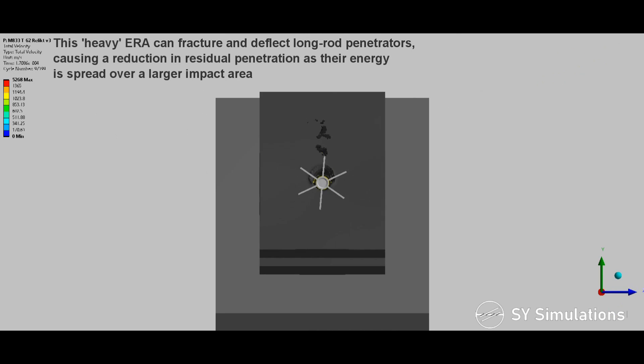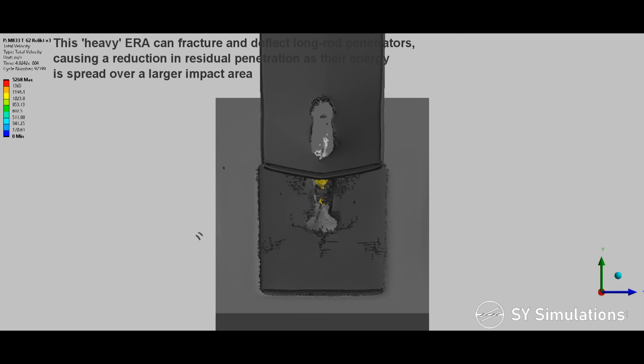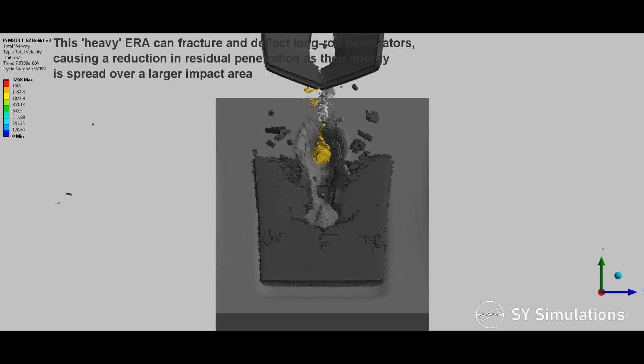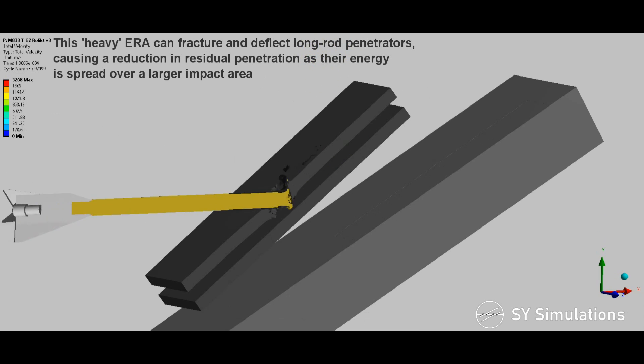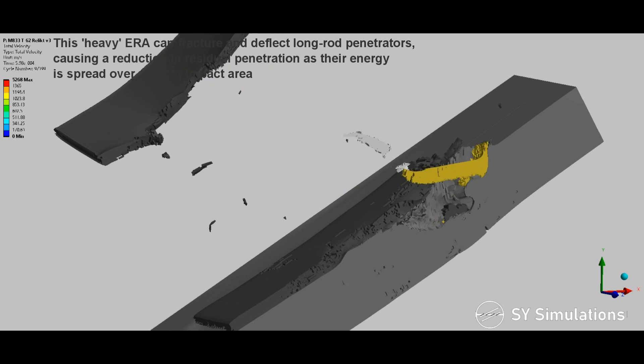This heavy explosive reactive armor can fracture and deflect long rod penetrators, causing a reduction in residual penetration as their energy is spread over a larger impact area.